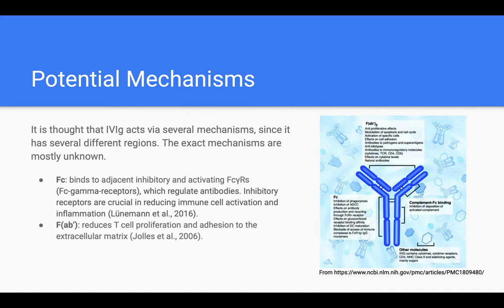The FC portion — the bottom portion shown in the graphic — is important because it binds to adjacent inhibitory and activating FC gamma receptors, which regulate antibodies. Inhibitory receptors are especially crucial because they are able to reduce immune cell activation and inflammation to the area. The FAB portion, the top portion, reduces T cell proliferation and adhesion to the extracellular matrix, again reducing that inflammatory response that can be harmful.